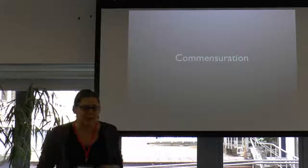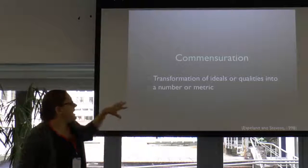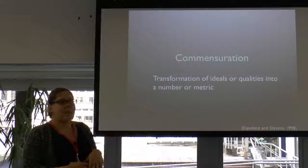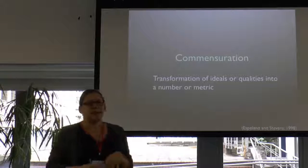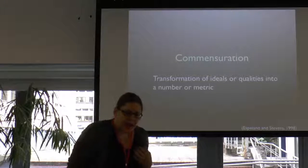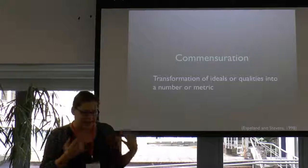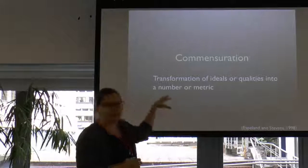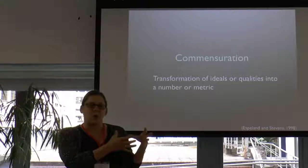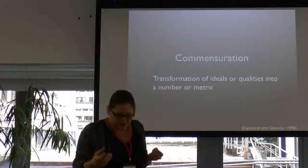I'm going to start with this concept from social science called commensuration. Commensuration is the transformation of ideals or qualities into a number or a metric. I'm using this definition from S. Flynn Stevens, which is a well-known article in the social sciences about commensuration. This sounds like a fairly simple task, but what the article argues is that it's crucial to how we categorize and make sense of the world.